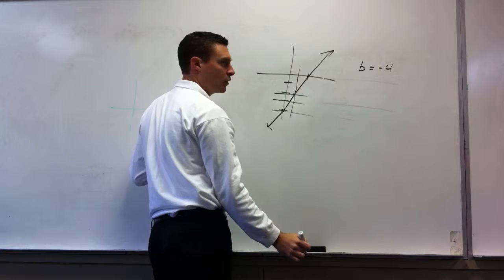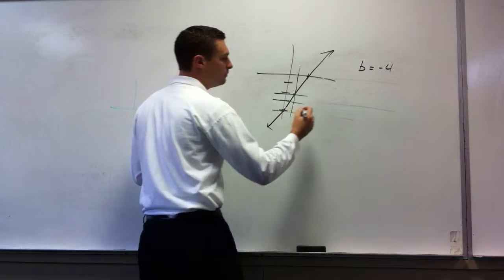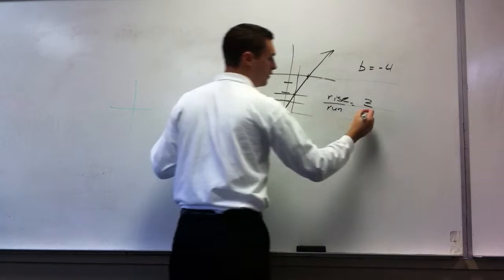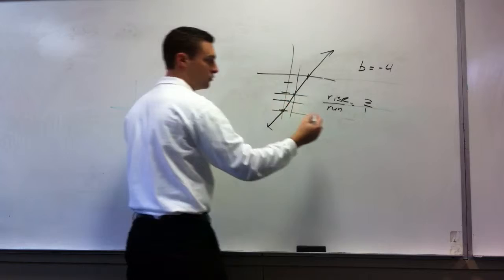If we're traveling from this point to this point, when we think slope, what's the phrase we always use? Rise over run. So how much do we rise from here to here? Two. How much do we run? One. Just to check ourselves, does this line have a positive slope? Yes. So the answer should be positive. So the slope of that would be two.